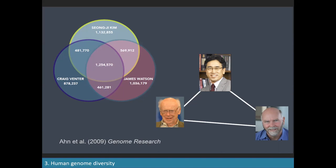If a scientist from outer space came to Earth and studied our species from these three individuals, they would classify Kim together with Watson — excluding Venter — as the most likely grouping. The least likely grouping would be the two Europeans together with Kim separated. This is an extreme case; in general, your neighbors are closer to you genetically than people from different continents — but only on average, and there is a lot of variation around that average.